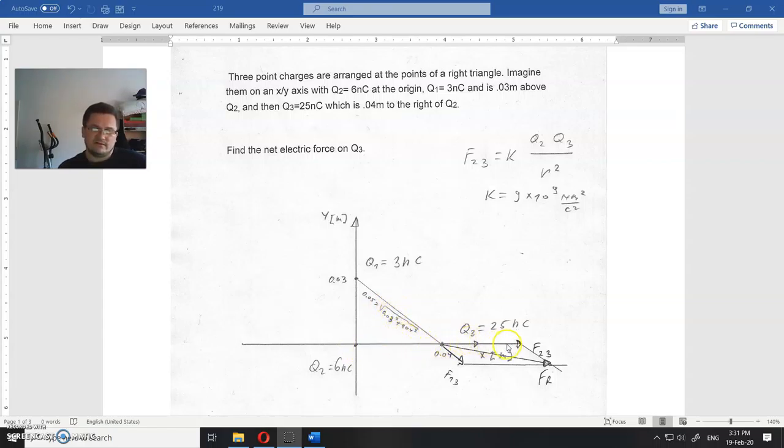So you have two forces: one is F2,3, that is force exerted on third charge by the second charge, and you have force F1,3 exerted by charge one on the third charge. And you need to add those two forces to get that resulting force FR here.